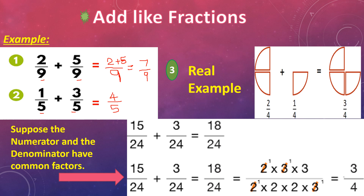I am giving a real-life example. This is one type of fraction. Another example: the denominator is the same here — 2 by 4 and 1 by 4. When we add these parts, we get 3 by 4. This is the example of a like fraction.